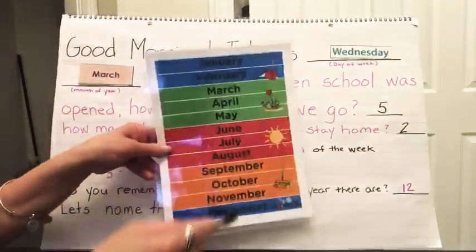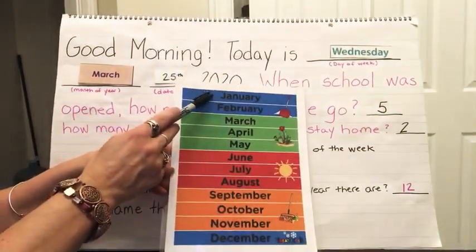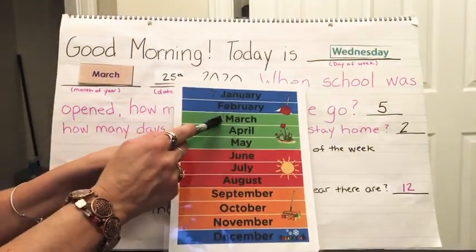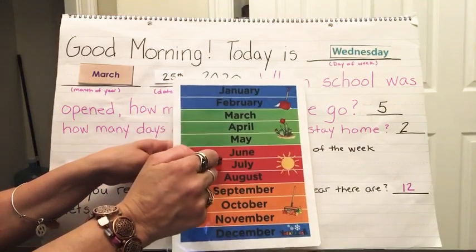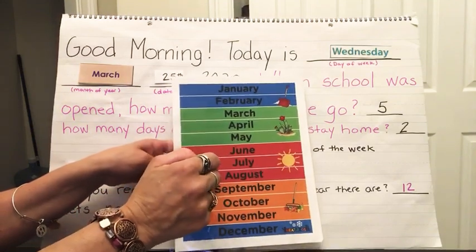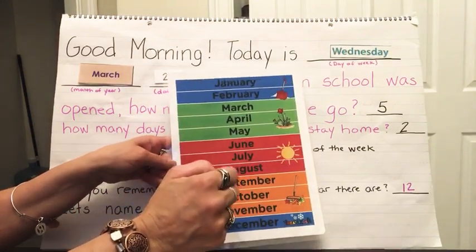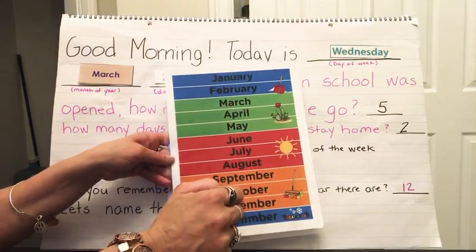Let's name the months of the year. January, February, March, April, May, June, July, August, September, October, November, and December.